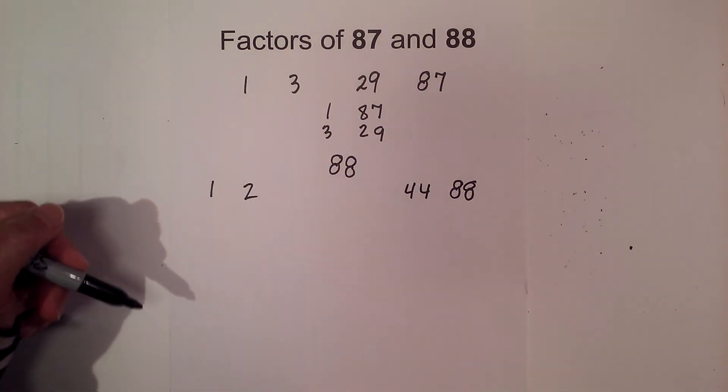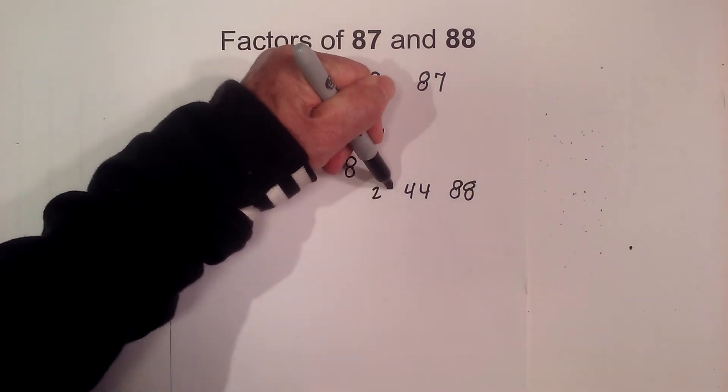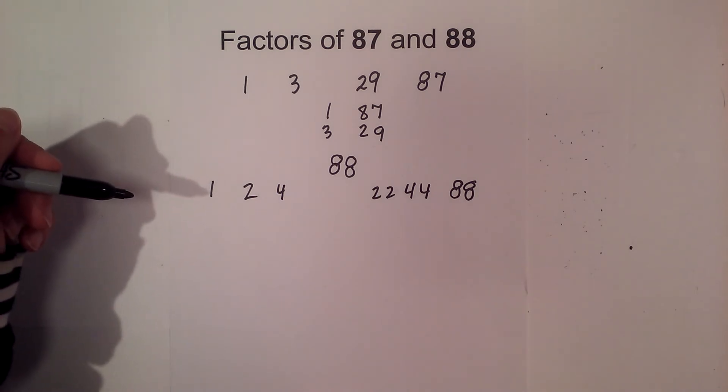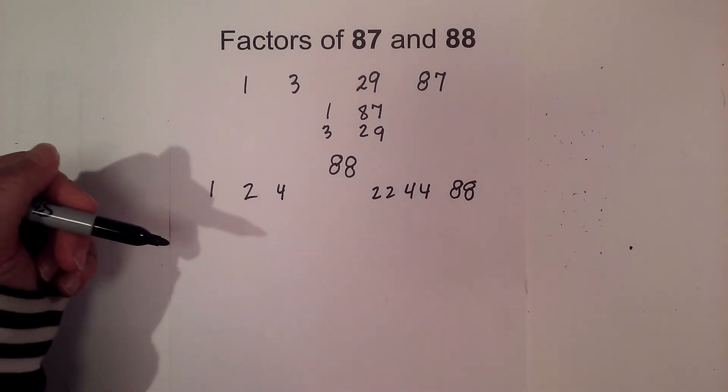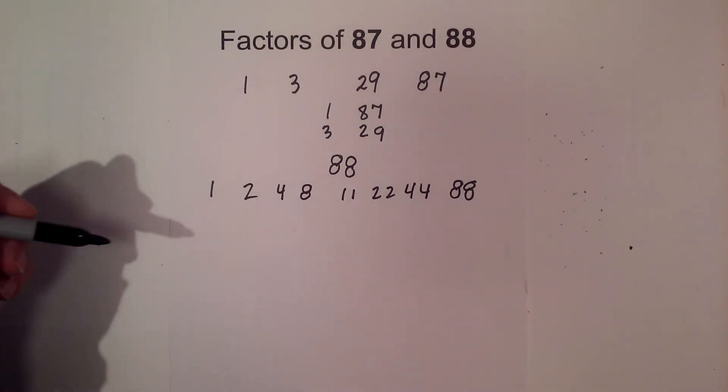And then 3 will not go into it, but 4 goes into 88 22 times. 5 will not go in, but 8 times 11 equals 88.